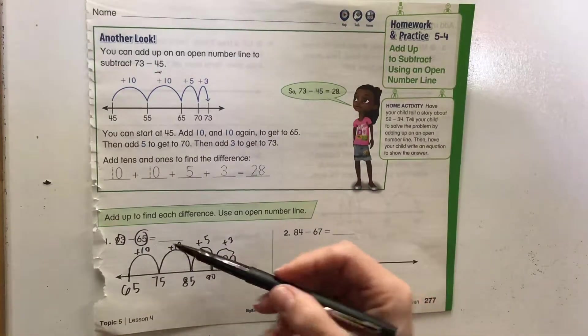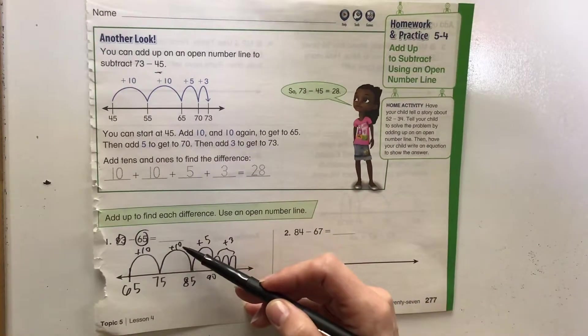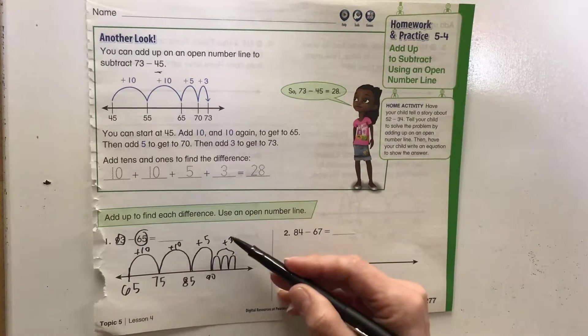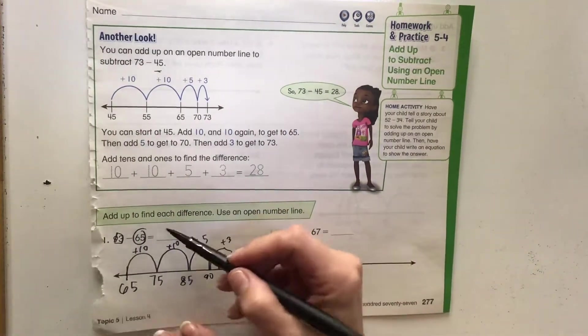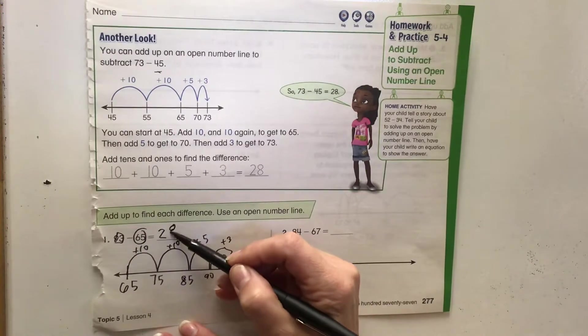So we can see what the difference is: it's 10, 20, 5, 26, 27, 28 will be our answer on this one.